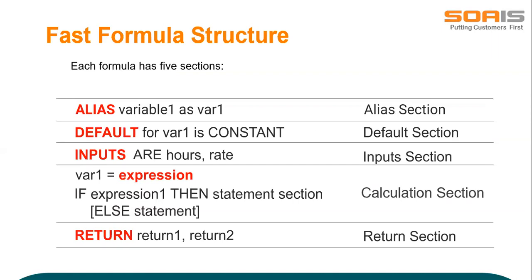Structure: a valid formula has a well-defined structure. It is made up of comments and statements. Oracle Fast Formula ignores the comments and carries out the instructions in the statements. The structure consists of five different sections: alias, default, input, calculation, and return section.